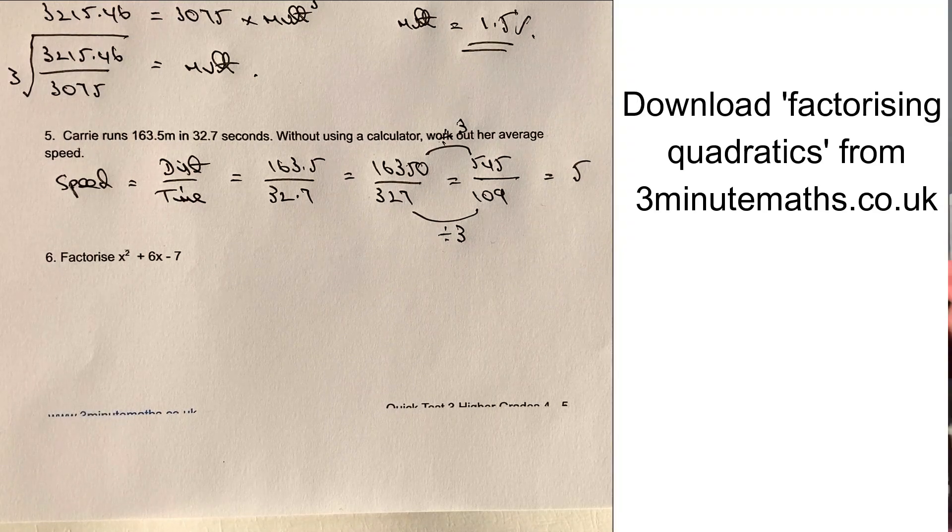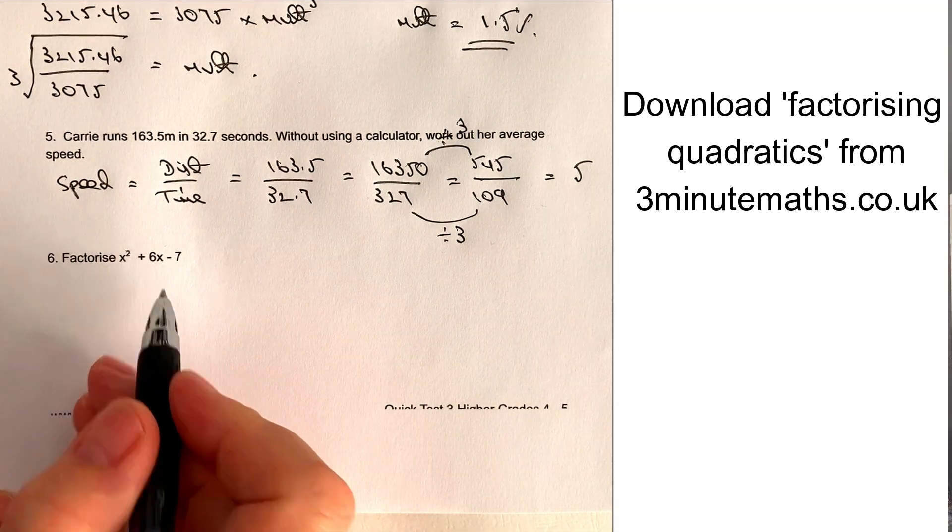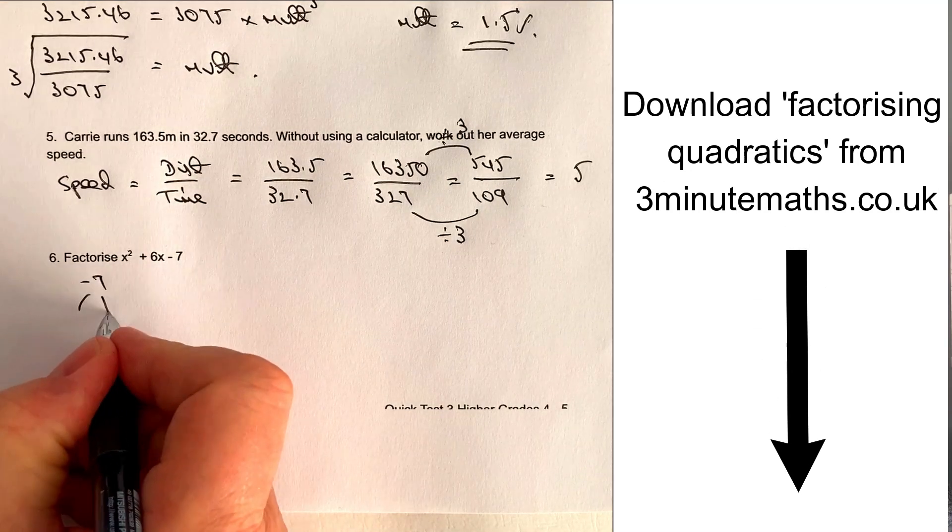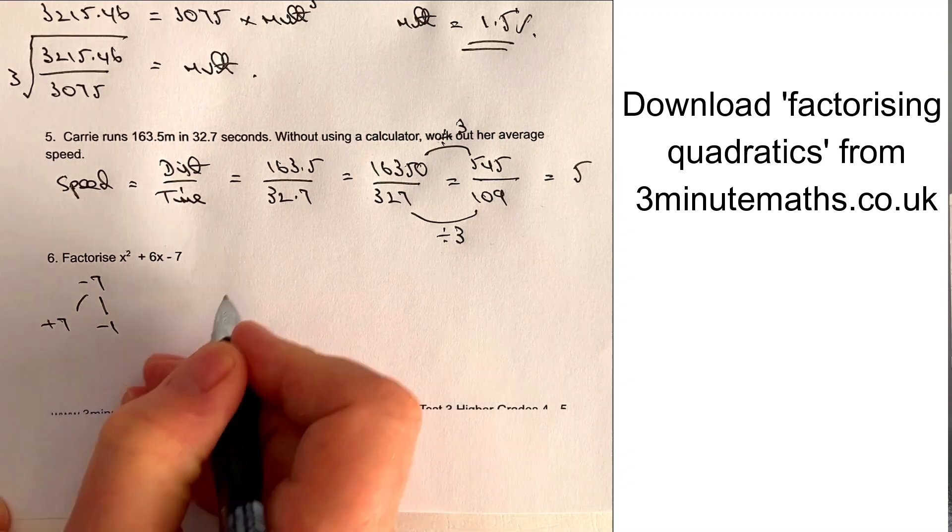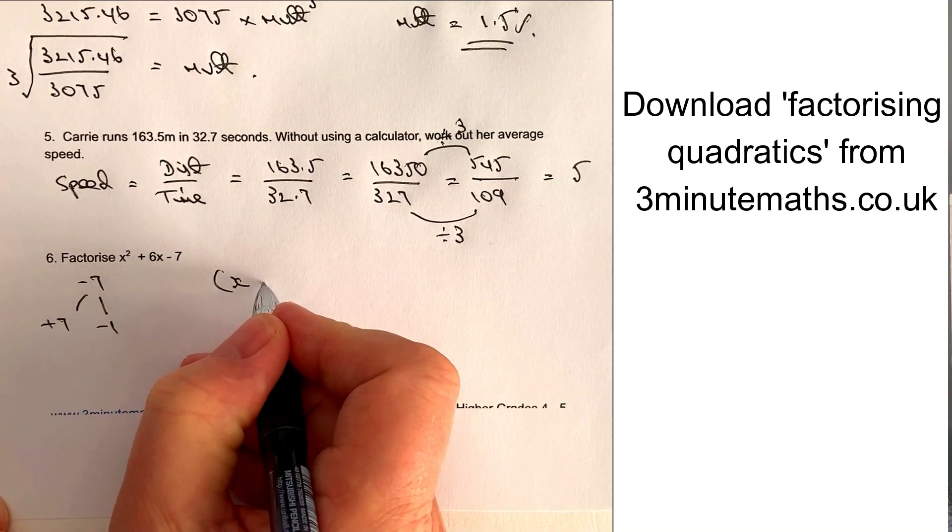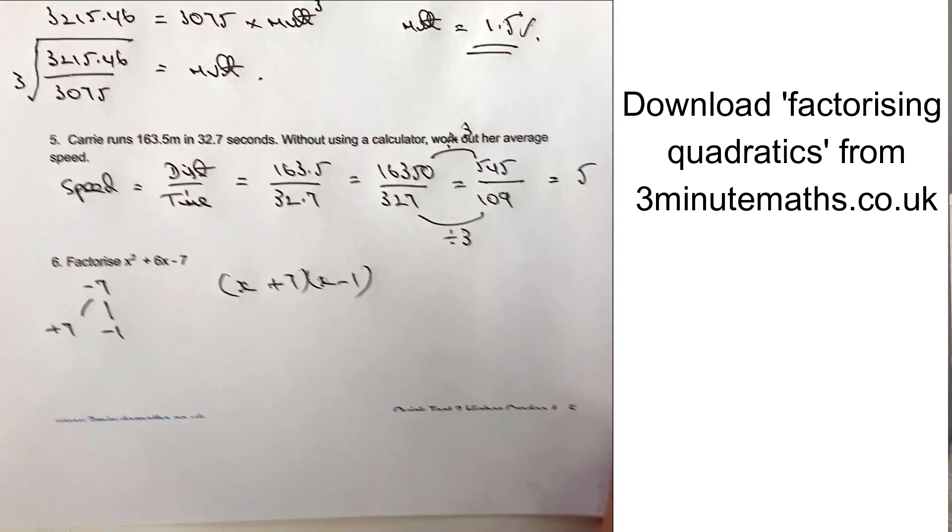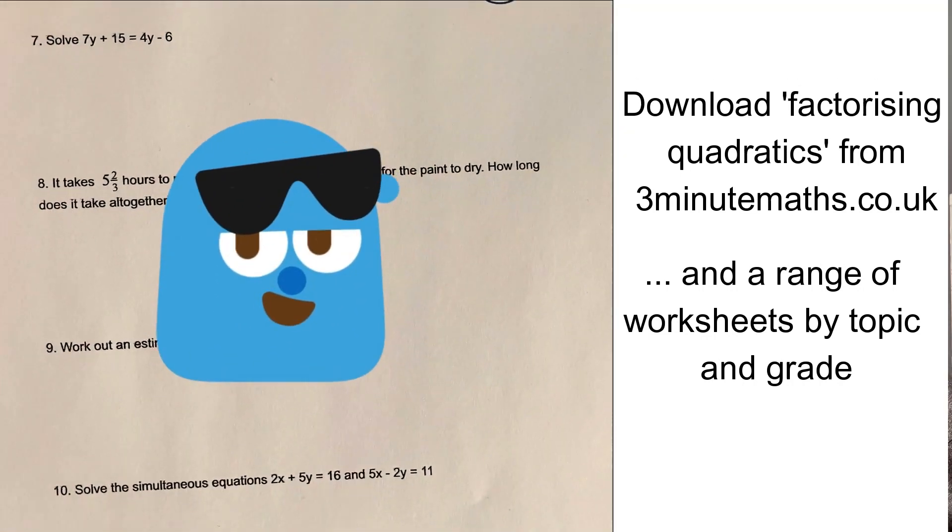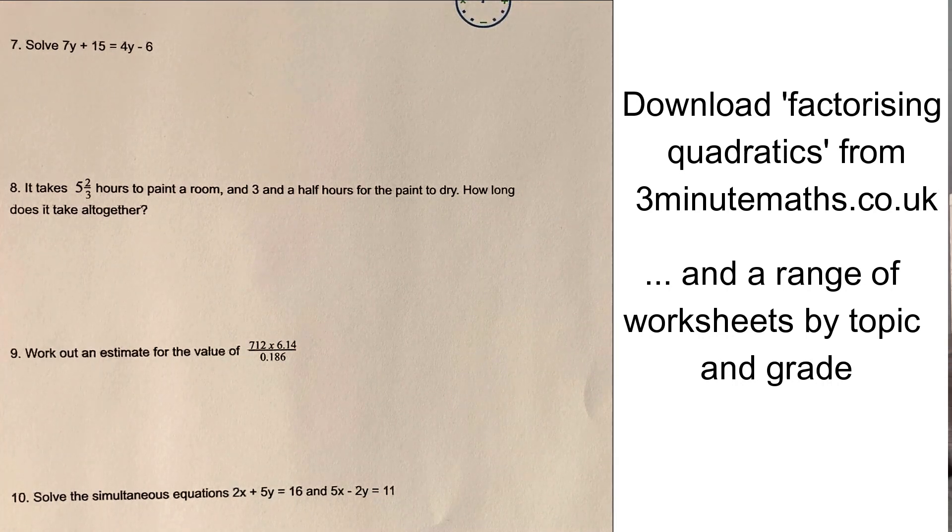So the final one of this sheet is going to be question number six, which is factorising. We want two numbers that when we multiply them together, make minus seven. When we add them together to make plus six, that's going to be plus seven and minus one. And we would write that as X plus seven multiplied by X minus one.